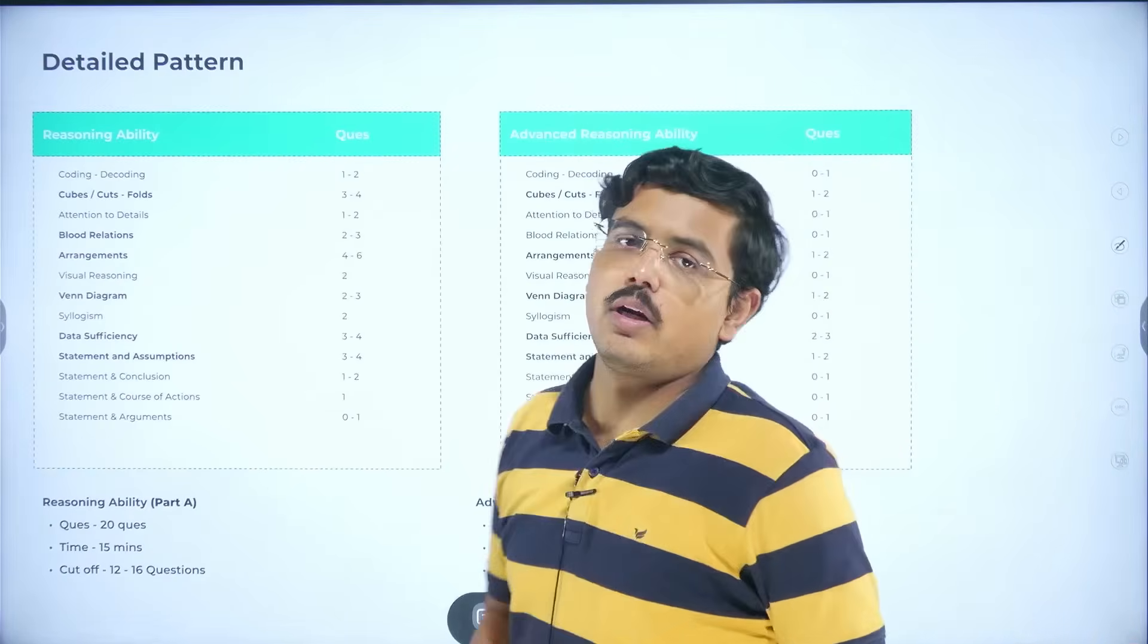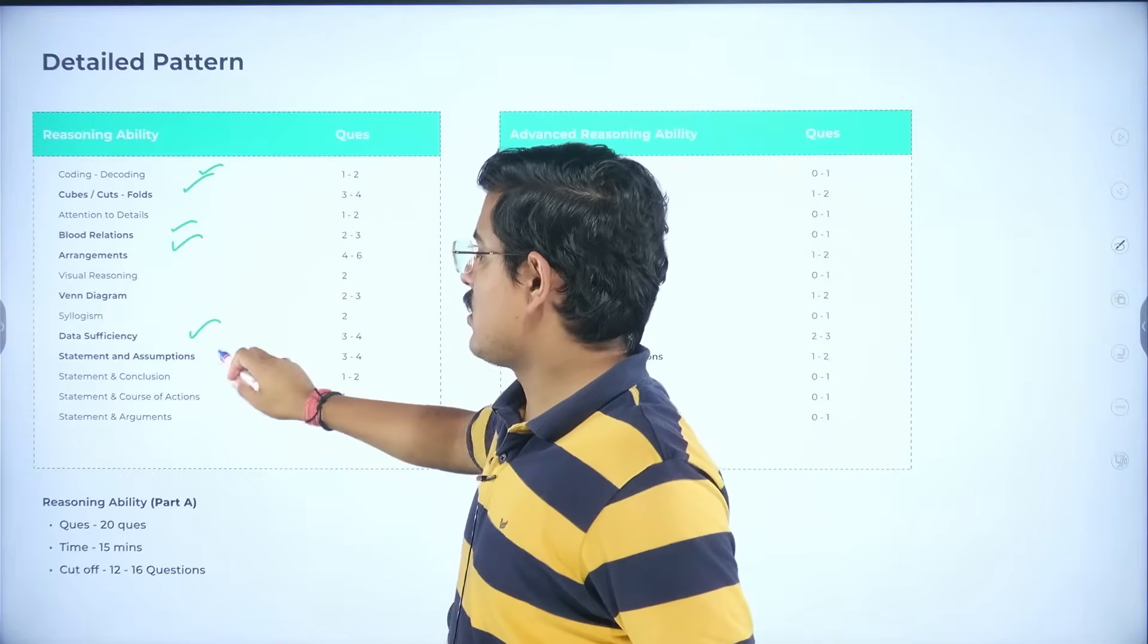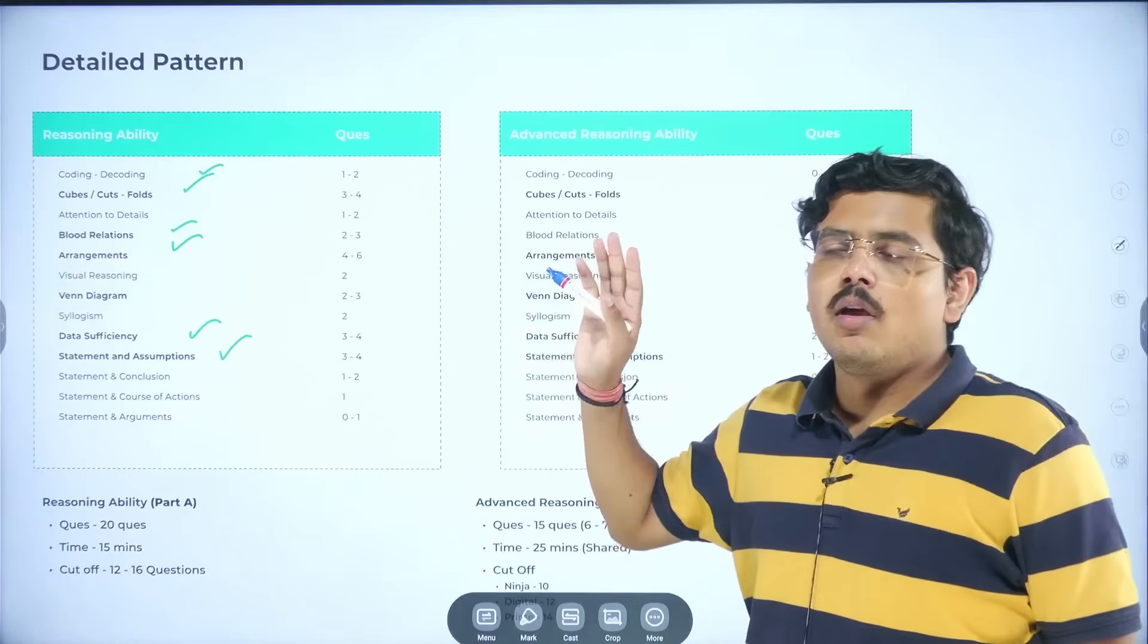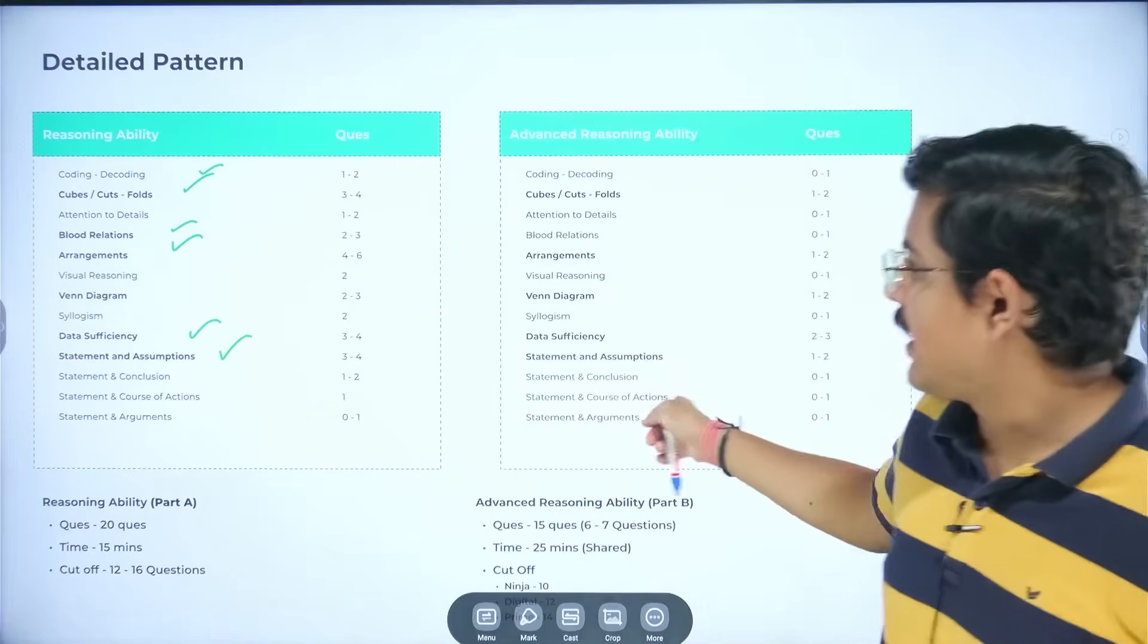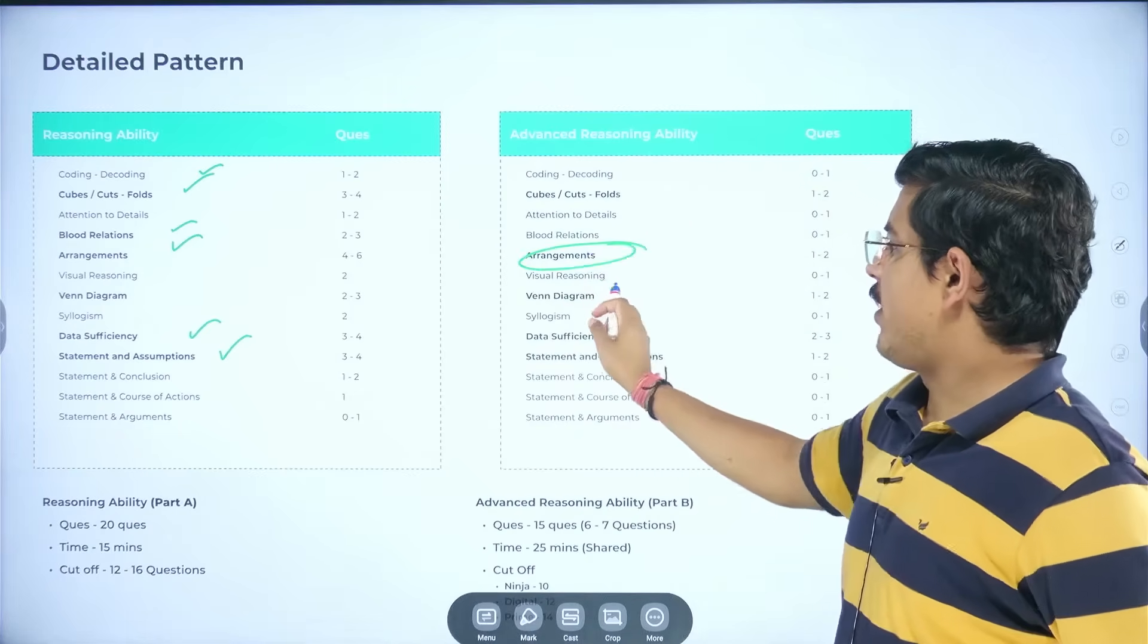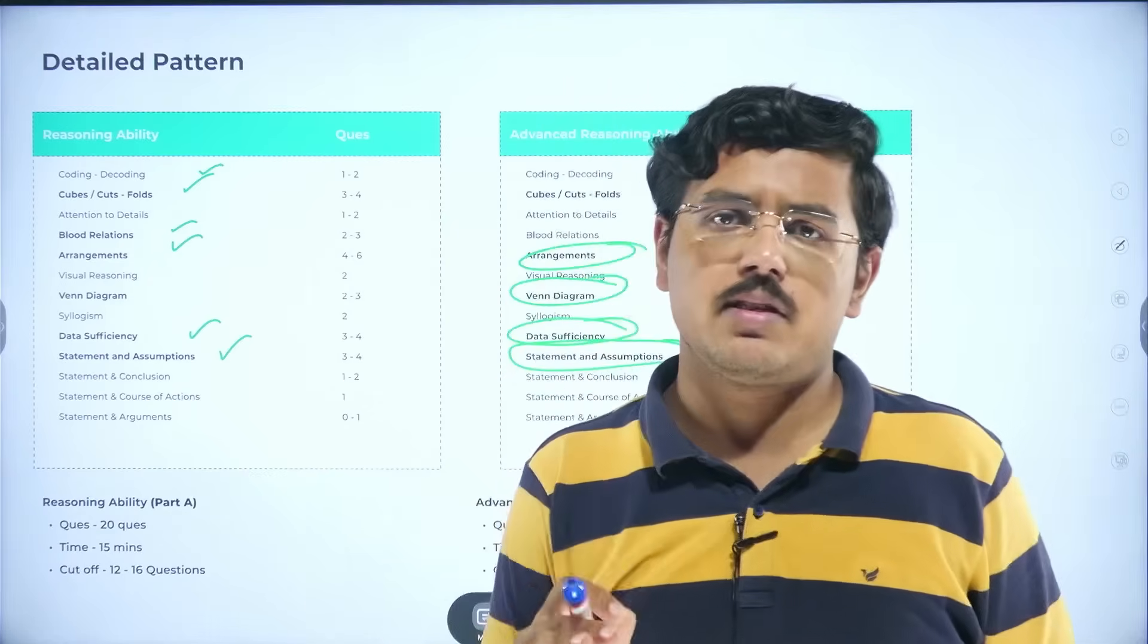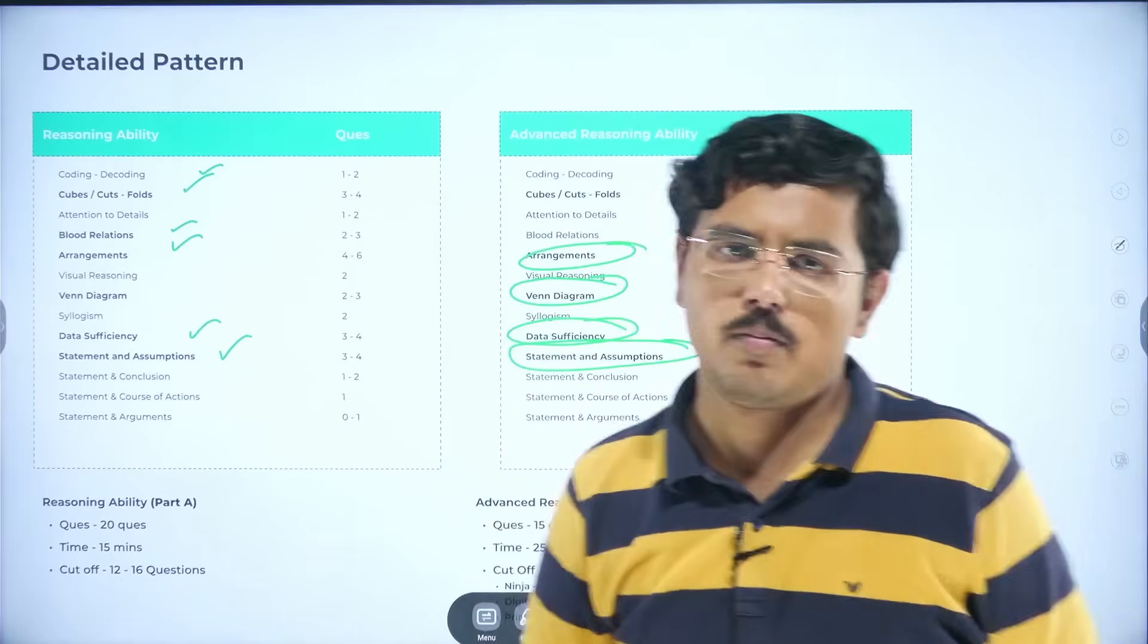Go ahead in reasoning. Prepare for coding-decoding. Very, very important. Cubes, cuts and folds, blood relations, arrangements, data sufficiency, statements and assumptions. There is a reason why these are pulled. The reason particularly for this is they are being repeated a lot of times in on-campus. Advanced reasoning: arrangements, Venn diagrams, data sufficiency, statement and assumptions. Very important. Specifically, statements and assumptions. Do prepare it well. You will always have at least two questions in your complete exam.